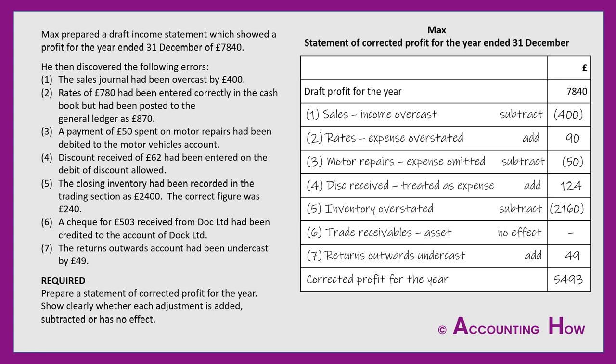The final stage is to total up the end column and see what the new figure is. The corrected profit for the year is £5,493. Make sure you give it a narrative — that is the corrected profit for the year. And there's the question complete.